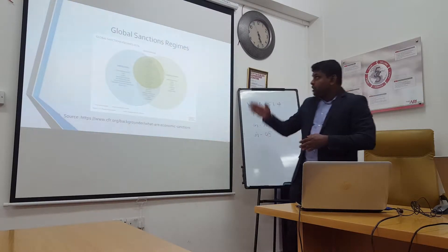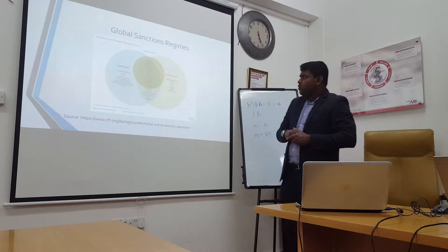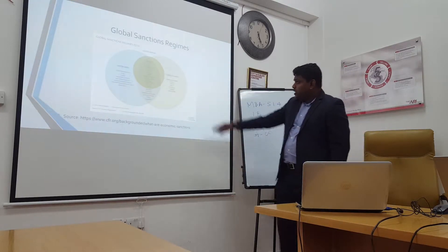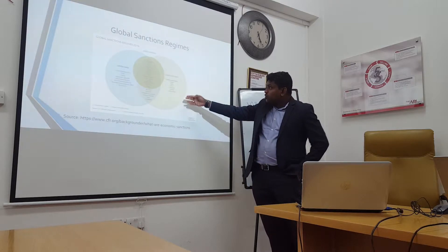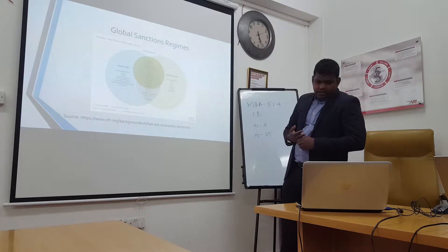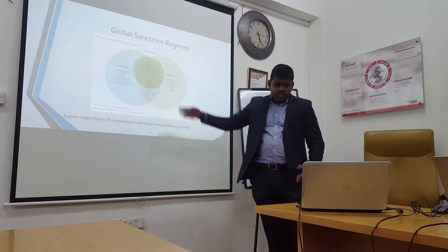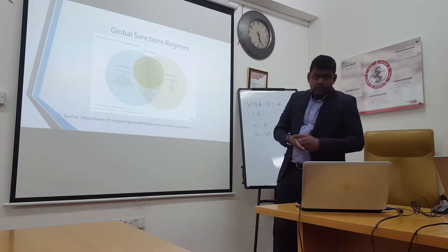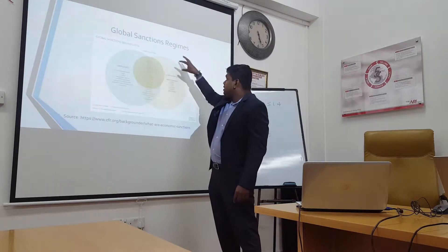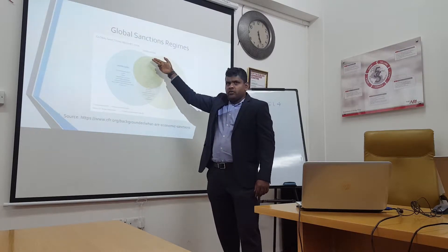This graph indicates global sanction regimes. There are three main regimes: the European Union, the United Nations, and the United States. This part of the chart shows sanctions by European Union countries. This part shows sanctions by the United States, which include Cuba and Venezuela. The middle part includes countries under sanctions from all three regimes — U.S., United Nations, and European Union — and Iran is one of these countries.